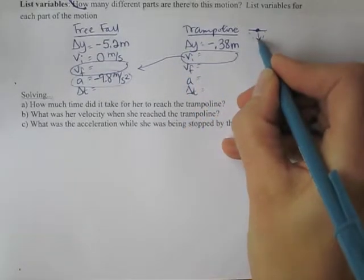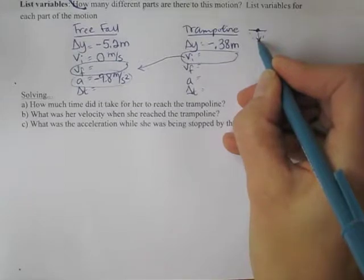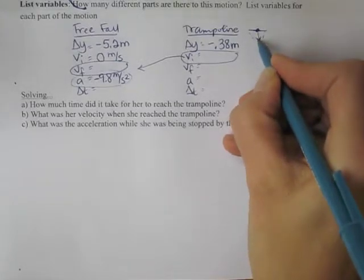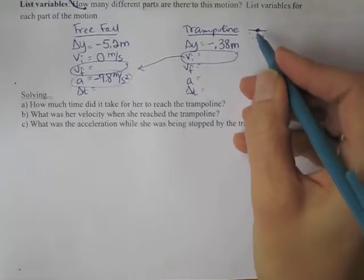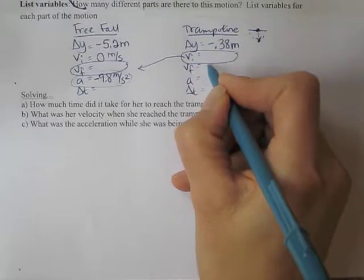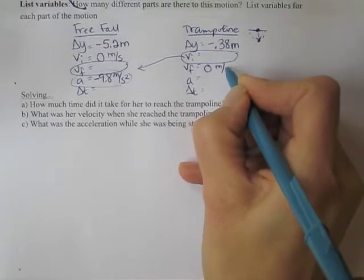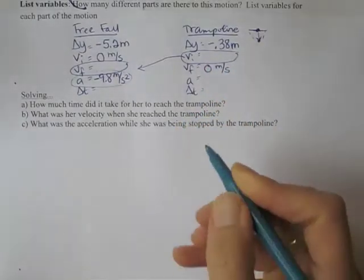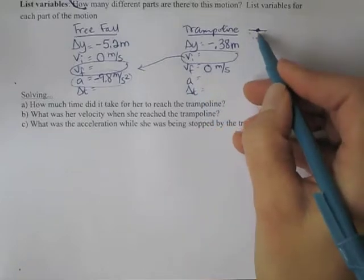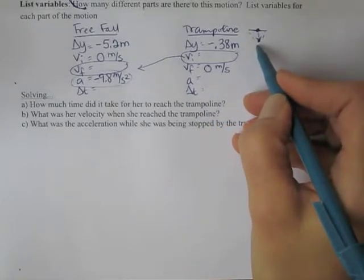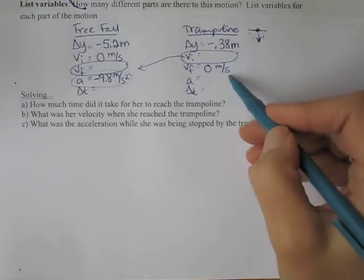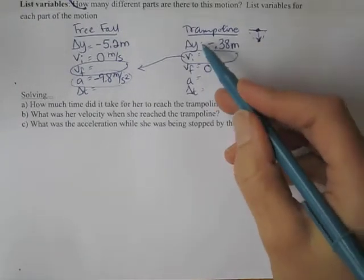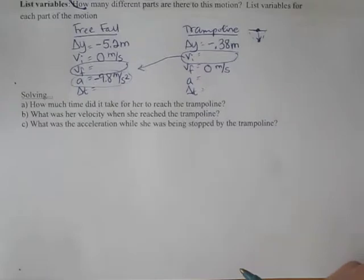So once you find the final velocity of the free fall motion, you can substitute it over here because that's the initial velocity for the trampoline part of the motion. Final velocity. That's the velocity at the bottom of the trampoline. So when the child has gone down as far as she or he is going to go, the child would be instantaneously at rest before bouncing back up. So this is going to be 0. The acceleration. We do not know the acceleration in the trampoline. And we don't know the time. So I say I only have two variables, which is not enough yet to solve for anything using these numbers.